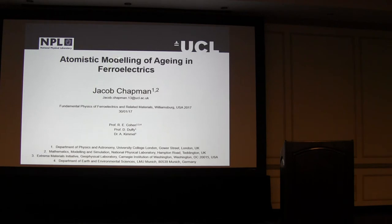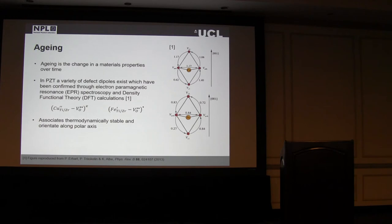The second part I wanted to talk about was atomistic model of aging in ferroelectrics. This is a quick introduction for the first one today, so I'll just introduce this here, and we can discuss that later if you come to my poster. Aging is defined as a change in the materials property over time. In PZT, you get different defect dipoles which exist. Whether you're doping on purpose, or it could be because atoms are introduced through fabrication or mining processes, you find that you get these defect associates with oxygen vacancies. These are thermodynamically stable, and you also find that they have their lowest energy where they're aligned with the domain.